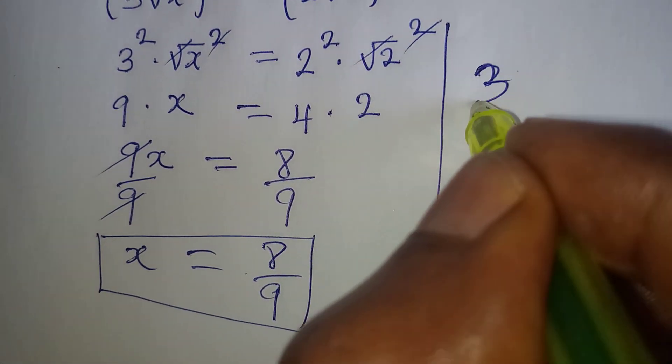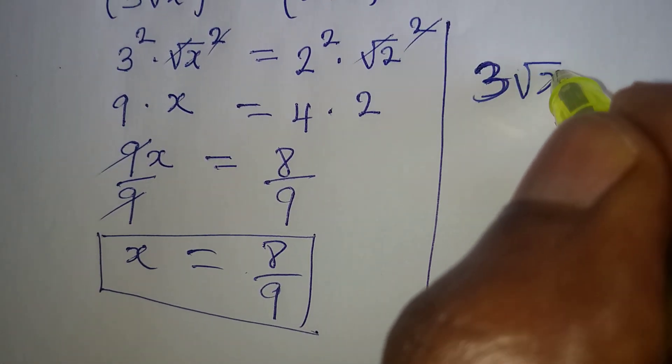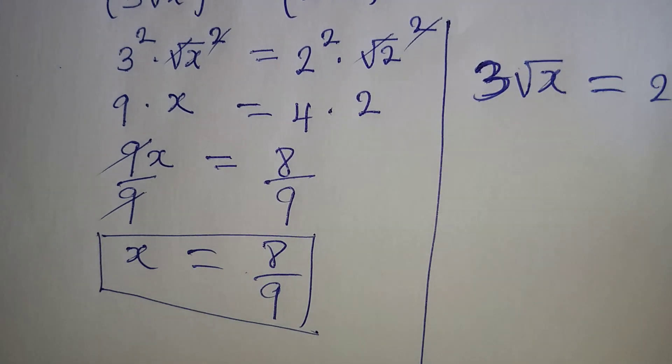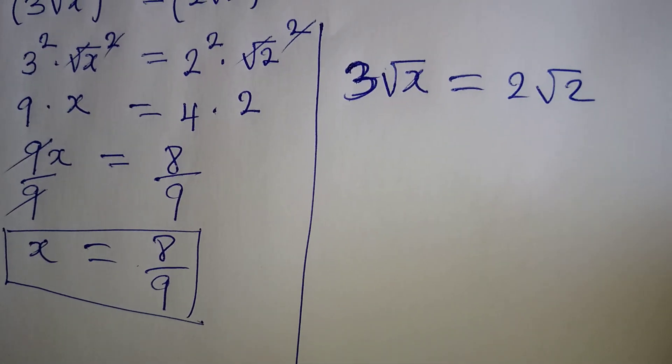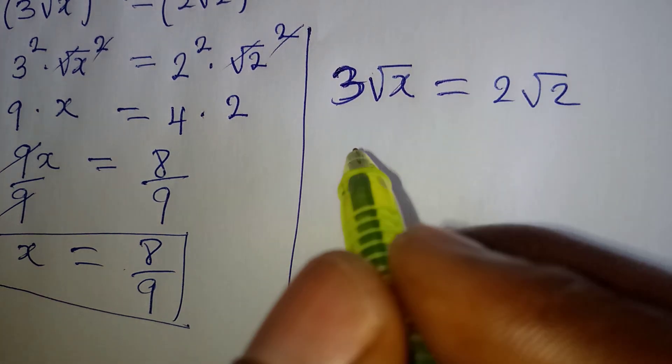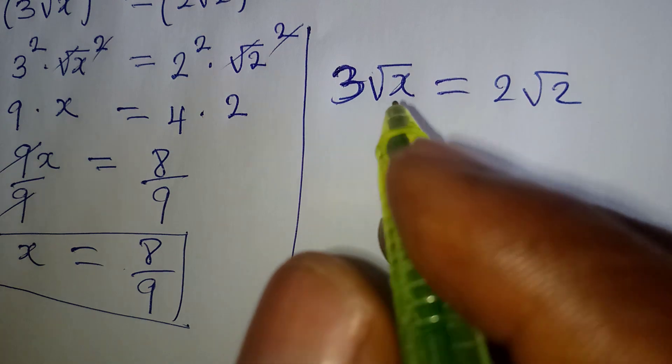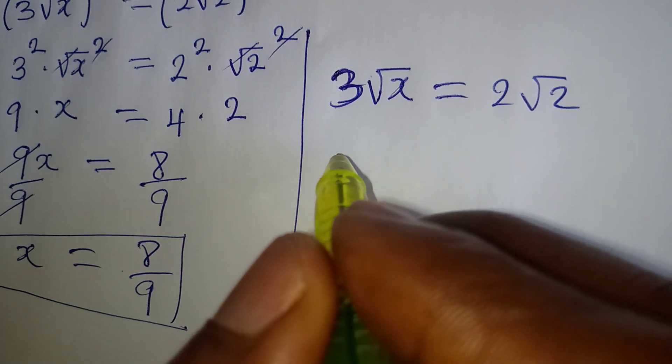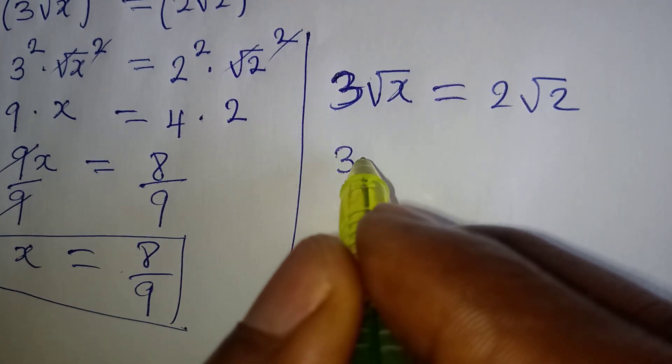it's actually 3 root x equal to 2 root 2. This is the original equation and our x is now 8 over 9. So that means we are going to be having 3 into,